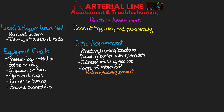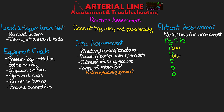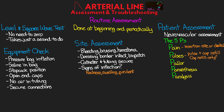Next, perform a patient assessment, primarily a neurovascular assessment using the five P's: Pain — assess for any at the insertion site or distally; Pulses — check pulse and capillary refill (with radial and pedal A-lines, a distal pulse may not be possible, so focus on cap refill); Pallor; Paresthesia — abnormal sensation such as a tingling or prickling; and Paralysis.